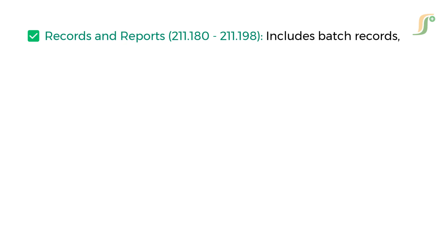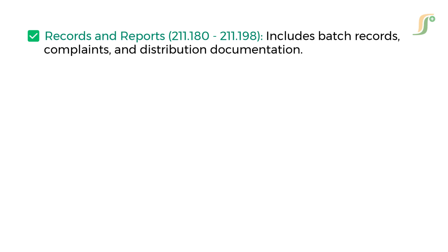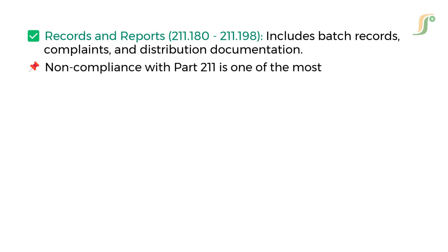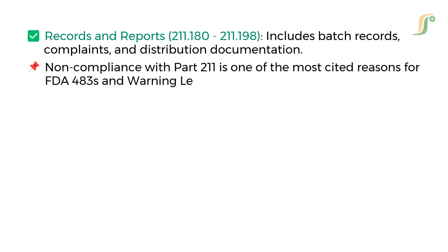Part 211 also covers Records and reports (211.180 to 211.198), which includes batch records, complaints, and distribution documentation. Non-compliance with Part 211 is one of the most cited reasons for FDA 483s and warning letters.